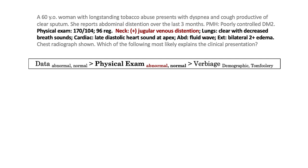Insofar as the physical exam, we see a patient with significant hypertension and a neck exam that reports jugular venous distension. This is a key physical exam finding — the question writer has just told you the patient has an elevation of the central venous pressure. We now know the patient has a cardiovascular etiology for their presentation.